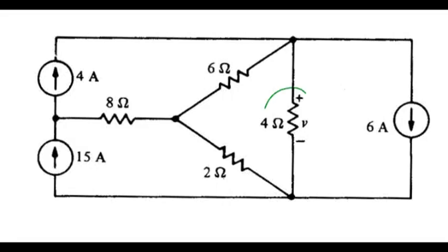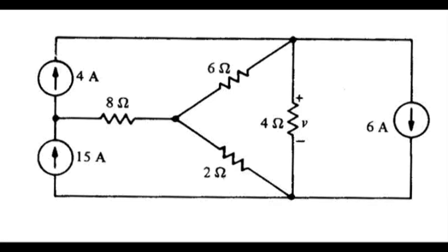In this problem, we're looking for the voltage V. The method for doing that is to essentially take the resistor out of the circuit, find the Thevenin equivalent of everything else, and then use that simplified circuit to find the desired voltage V.